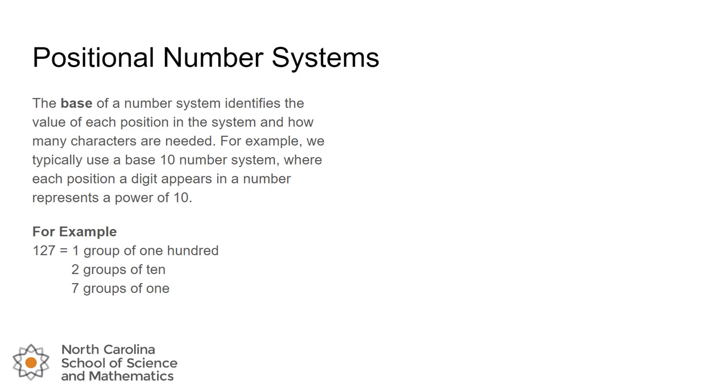When we define a positional number system, the base of the number system identifies the value of each position in the system, and it also tells you how many characters are needed to represent numbers. For example, we use base 10. That tells us that every position within our digit is a certain power of 10, and there's also only 10 different characters that we need to represent our numbers.